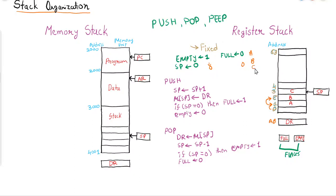Now storing C: C is placed into DR, SP = SP + 1, so SP becomes 3. M[3] = DR, so C is stored at memory location 3. SP is not 0, so empty remains 0. Likewise, continuing until location 63 where we store ZZ. Note that every time the content of DR will be overwritten. The process continues similarly for each element.